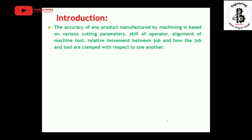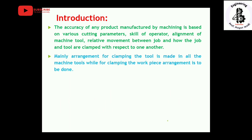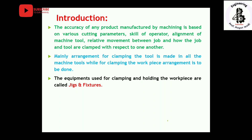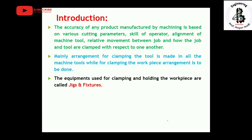The accuracy of any product manufactured by machining is based on various cutting parameters, such as the skill of the operator, alignment of the machine tools, and relative movements between the job and how the job and tool are clamped with respect to one another. Mainly, the arrangement for clamping the tool is made in all machine tools, while the clamping work piece arrangement also needs to be done properly to ensure accuracy. This reduces alignment of the tool and work piece timings.